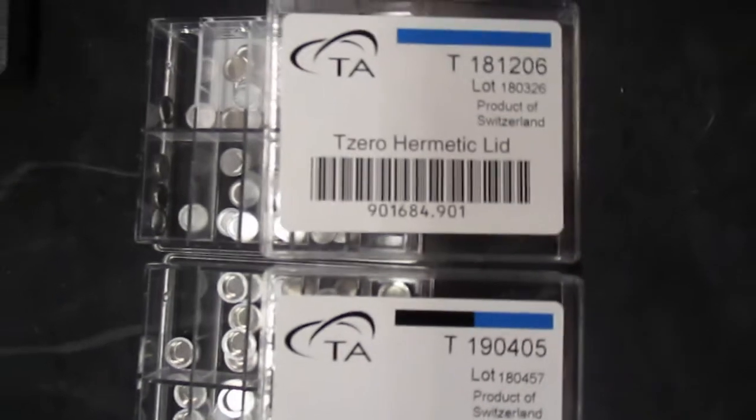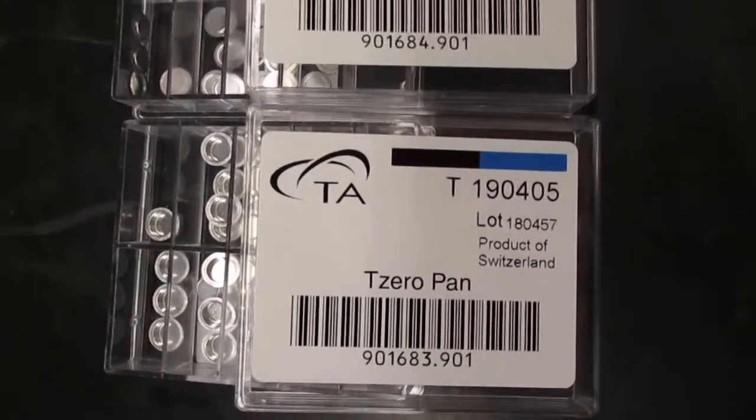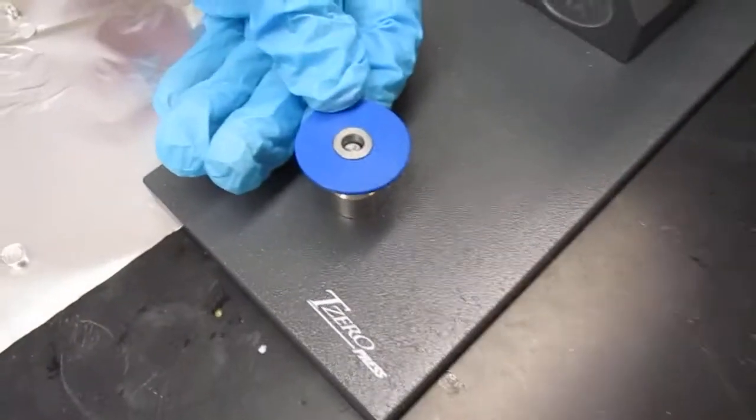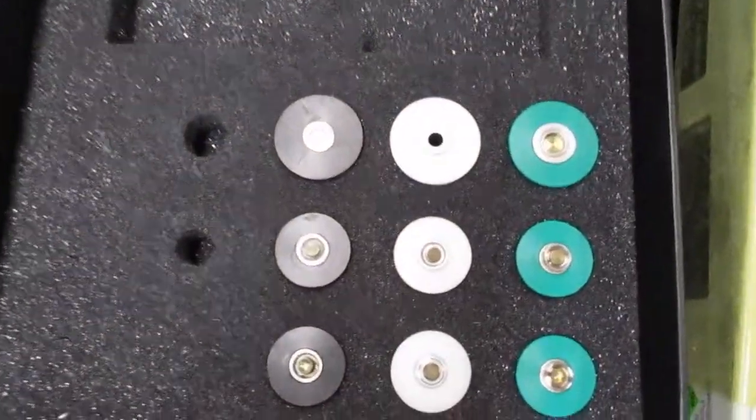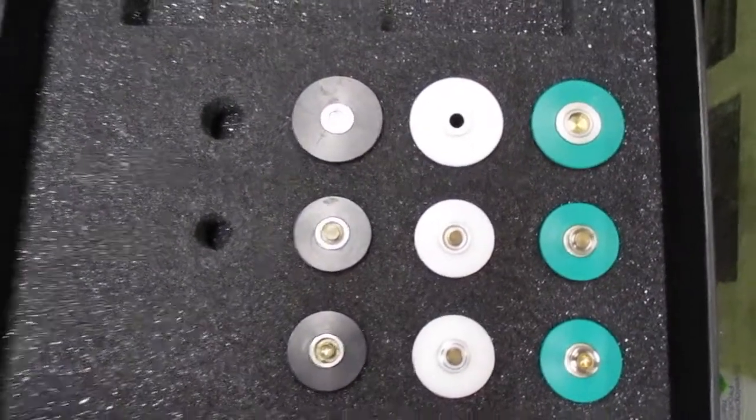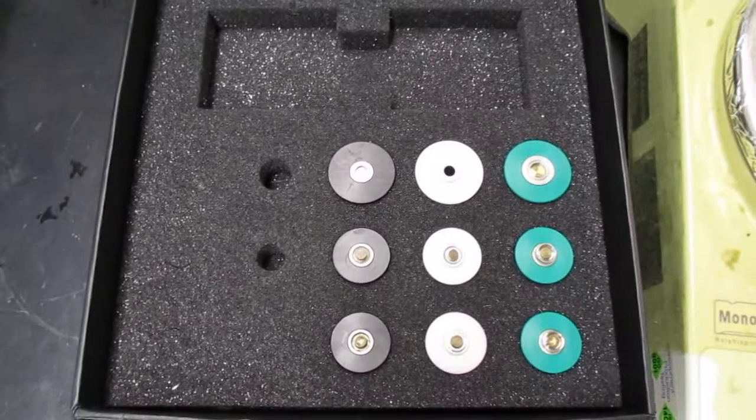For today we are using the T0 Hermetic pans and lids, and for this size we have to use these blue platforms which has a cap that is on the press already right there. Now if you have different types or different sizes of pans and lids, you're going to need to use these different colored caps accordingly which correspond to different sizes of pans and lids.